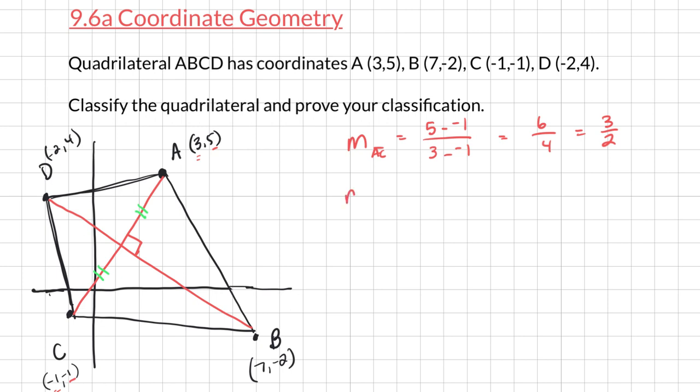I'm going to look at the slope of the other diagonal. The slope of DB, rise over run again, 4 minus negative 2. Now change in X, negative 2 minus 7. This is 6 over 9, which reduces to 2 over 3. Oh, that's negative. I missed the negative right there. 3 halves and negative 2 thirds are negative reciprocals.